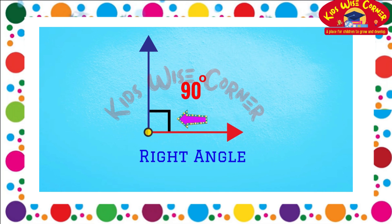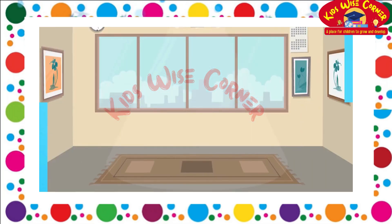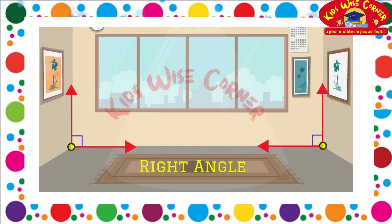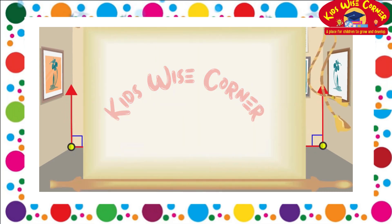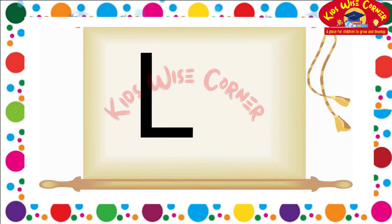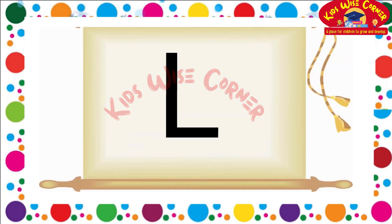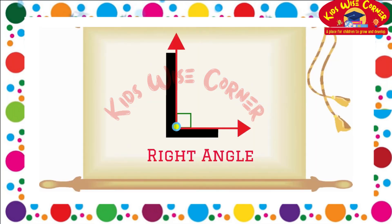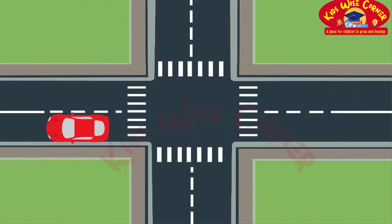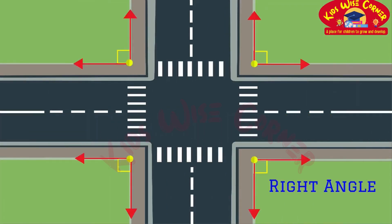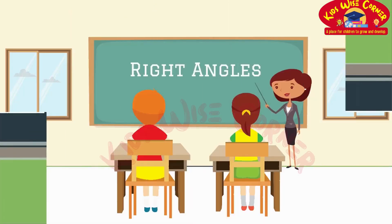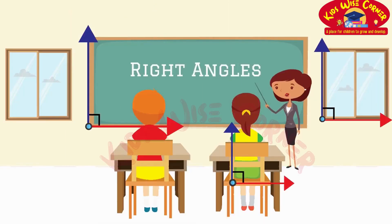If you notice carefully, you will find the corners of a room make a right angle. One good example of a right angle is the letter L. Crossroads, too, will remind you of right angles. You just need to look around and you may find hundreds of examples to add to your list of right angles.